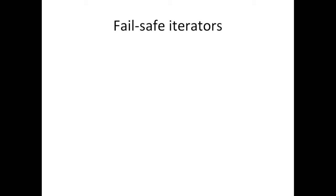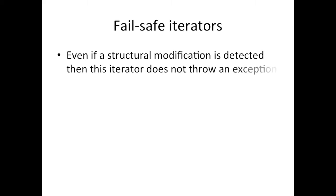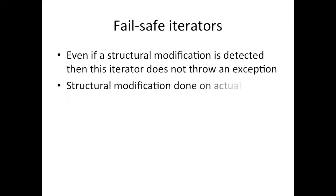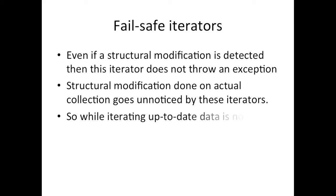Now let's have a look at fail-safe iterators. Even if a structural modification is detected, this iterator does not throw an exception. The structural modification done on the actual collection goes unnoticed by these iterators because these iterators create a copy of the original collection.